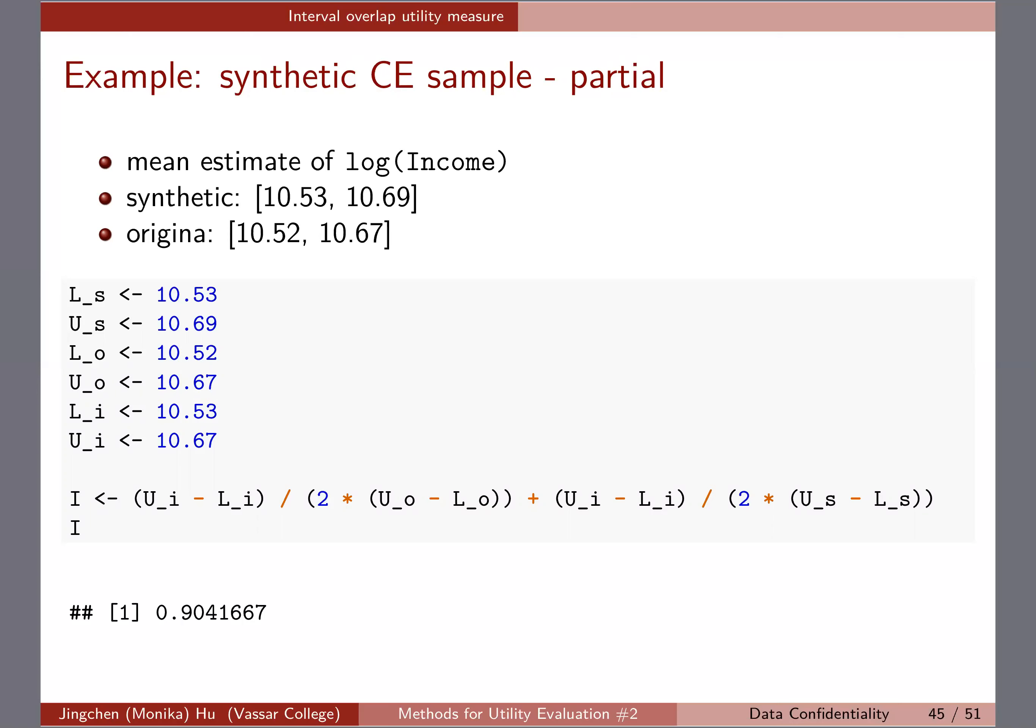Without doing the I value or I measure, we can see the confidence intervals are pretty close. The lower bounds are only off by 0.01 actually, and the upper bound is only off by 0.02. So it wouldn't be too surprising that the I utility here would be pretty high. In this case, about 0.9, very good.